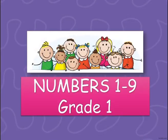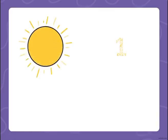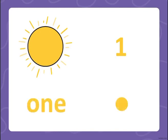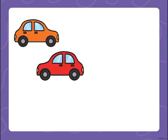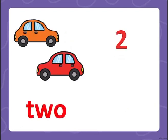Hello students, our lesson today is about numbers from 1 to 9. Let's start with number one — we have here only one sun, so it's the number one. Two — we have here two cars, so it's the number two.